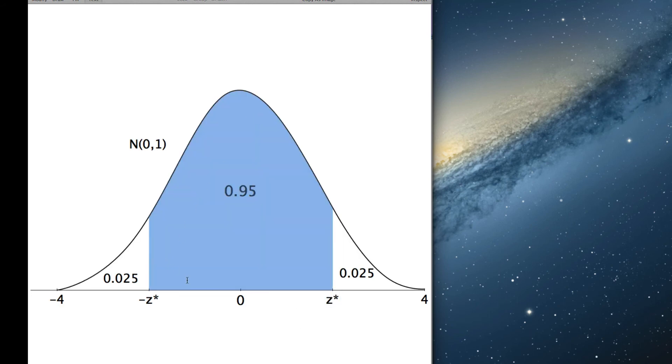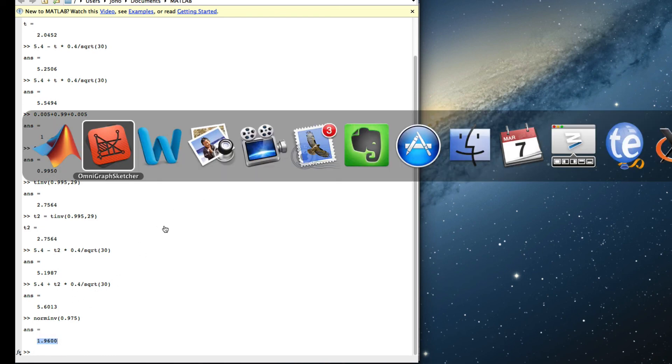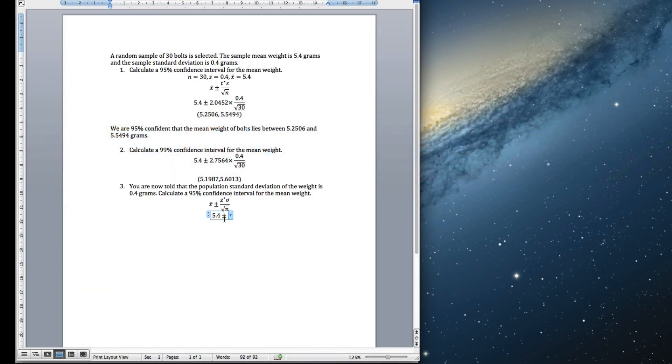Again MATLAB won't give us these numbers directly but what it will do is using norm inverse it will give us the number such as the area left of this we can give. So the area to the left of z star is 0.95 plus 0.025 or 0.975. So we use norm inverse, 0.975. We don't need to give degrees of freedom because there isn't any degrees of freedom for normal and we get the 1.96. We are told the population standard deviation, sigma is 0.4.